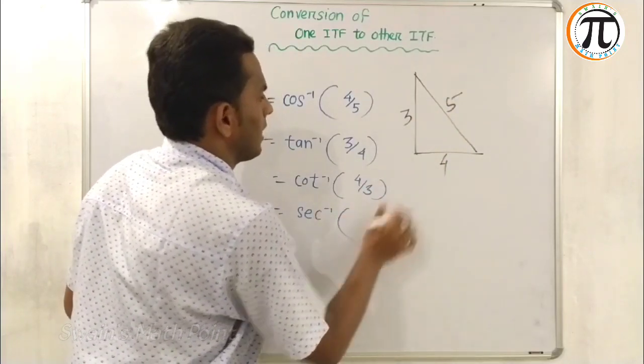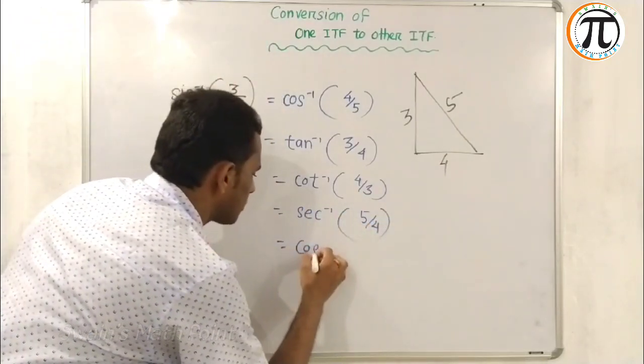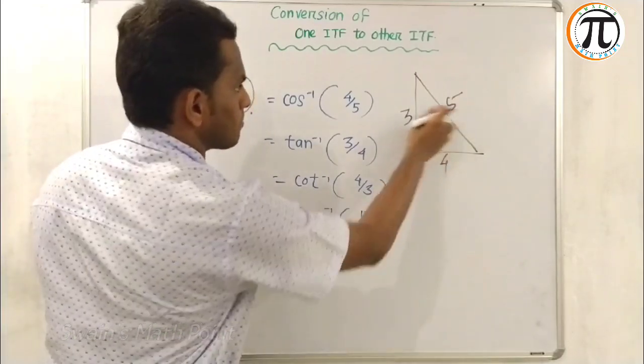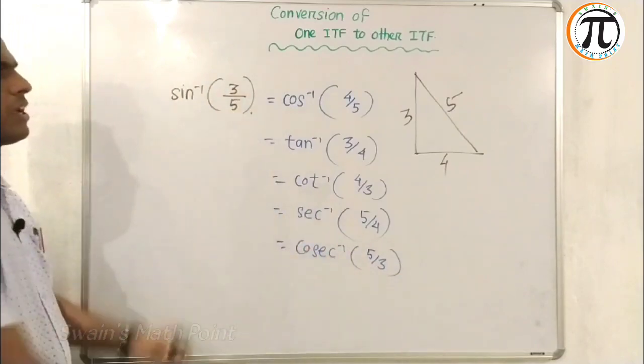Sorry, H by B is 5 by 4. So what will cosecant inverse be? H by P, just the reverse of sine, which is 5 by 3. Clear?